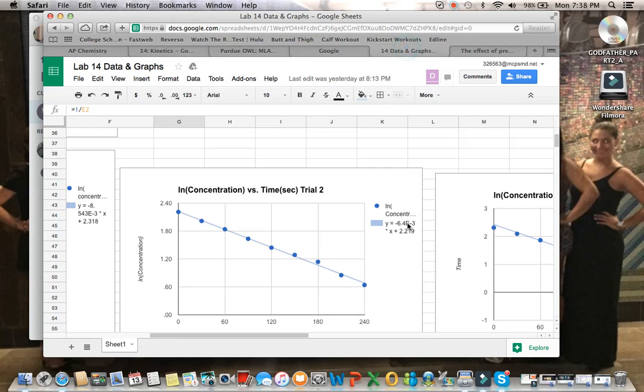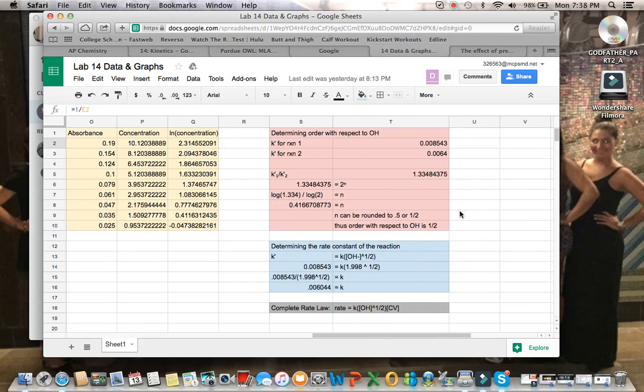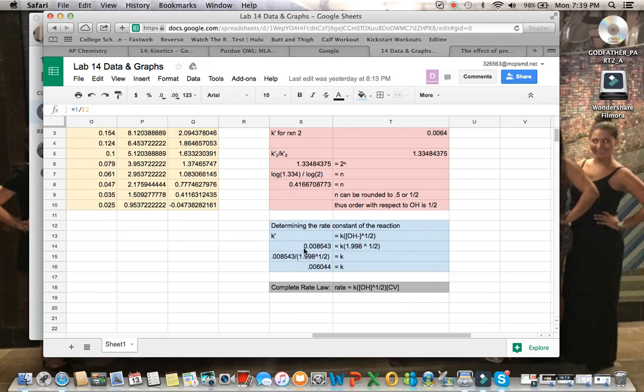Just a quick point about how we got those values. We were able to use the K primes for both our trial one and trial two, which is what we used. With some math, we figured out that N equals this value here, and then we rounded it to 0.5, which is how we figured that out. And then the rate constant, we played with the K prime equation. K prime equals K of the concentration of OH. That's the equation we used for that, which is what allowed us to figure out what K was, and then leave us with the complete rate law.